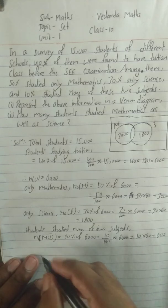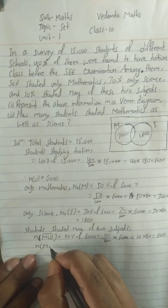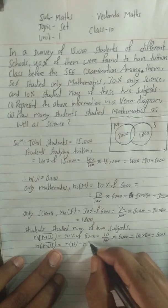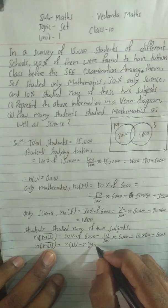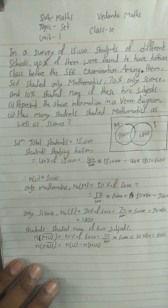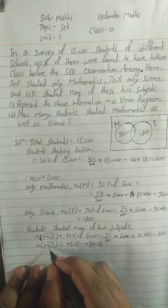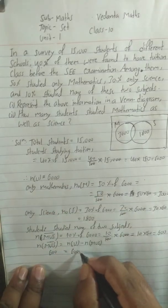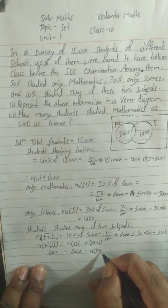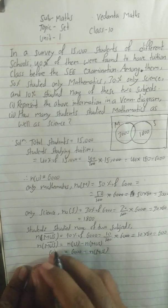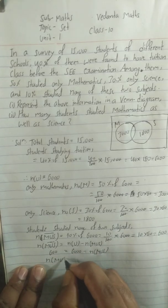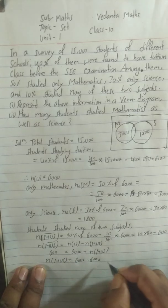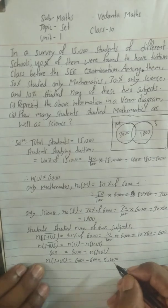From this we write the formula: n(M ∪ S)' = n(U) − n(M ∪ S). We have n(M ∪ S)' = 600 and n(U) = 6,000. So: 600 = 6,000 − n(M ∪ S). Rearranging: n(M ∪ S) = 6,000 − 600 = 5,400. We got the union = 5,400.